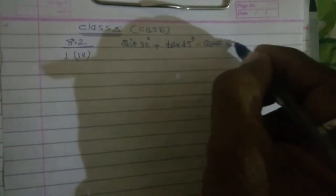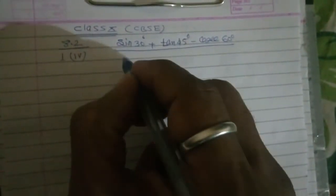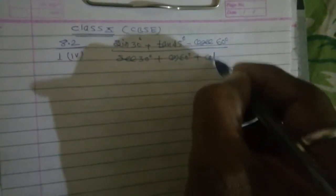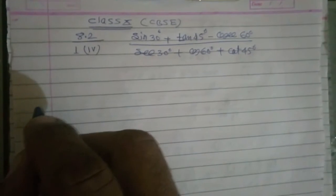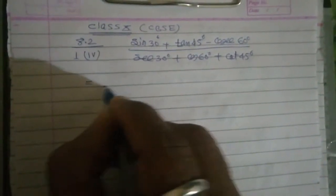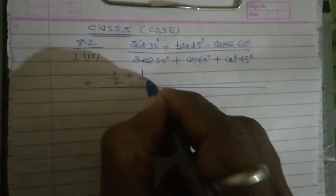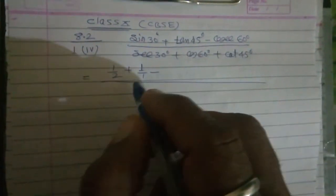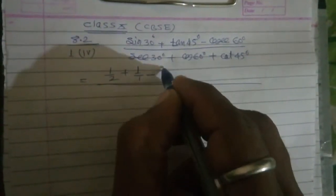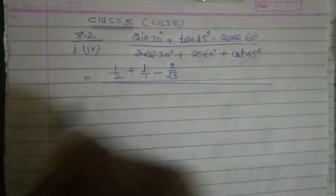So now exercise 8.2, question number 4. The question is: sin 30° plus cos 45° minus cosec 60°, upon a denominator expression. We can write 1 upon 1 minus cosec 60°, which gives us 2 upon root 3. And sec 30°.